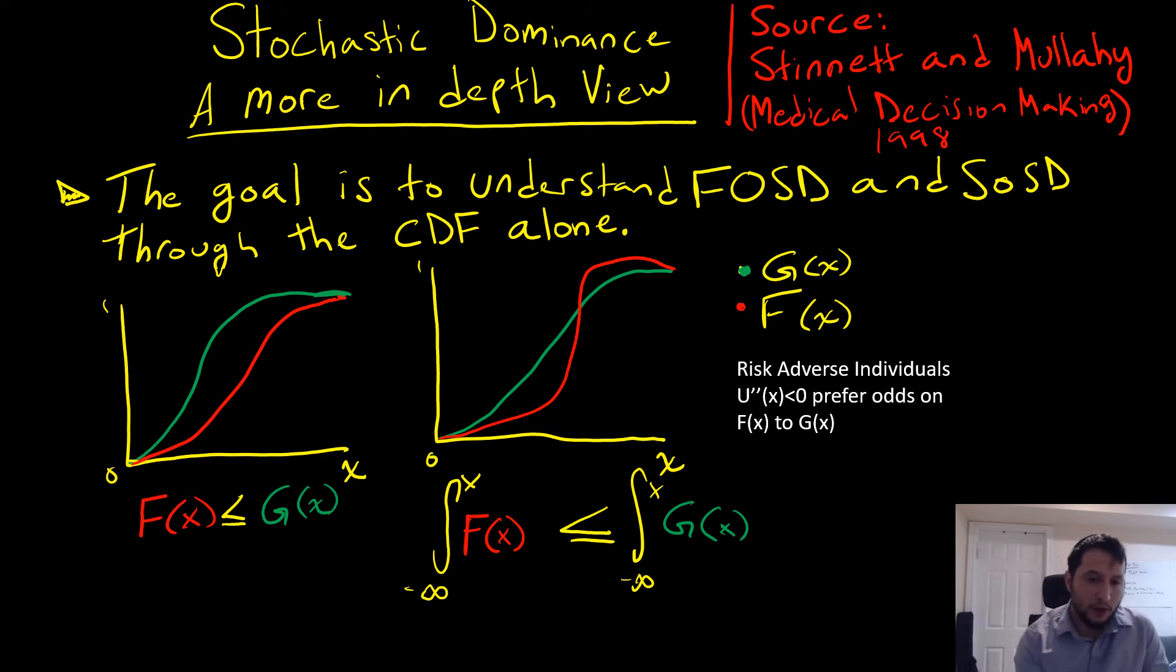Another point: for second order stochastic dominance, this can loop over many times and it can look very strange with regards to your results. But what this means is that we have the area of F being less than that of G(x).